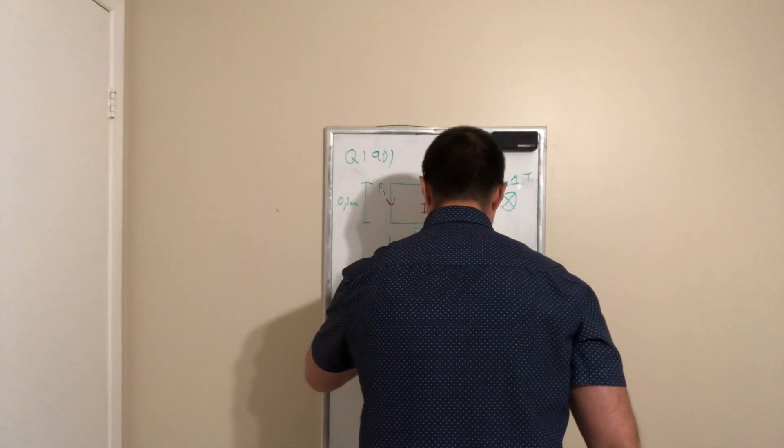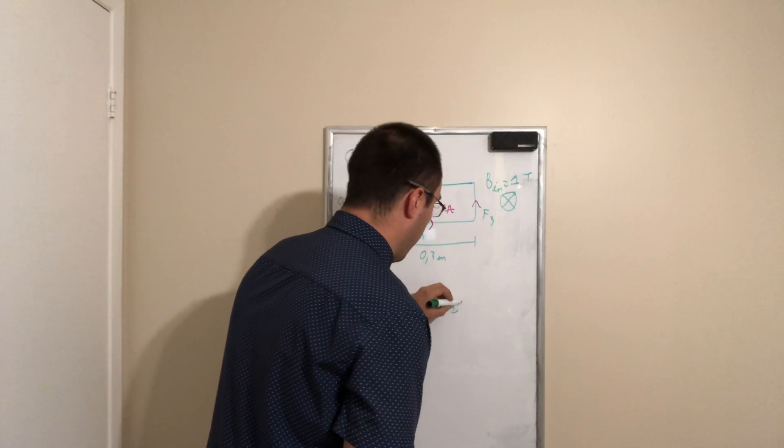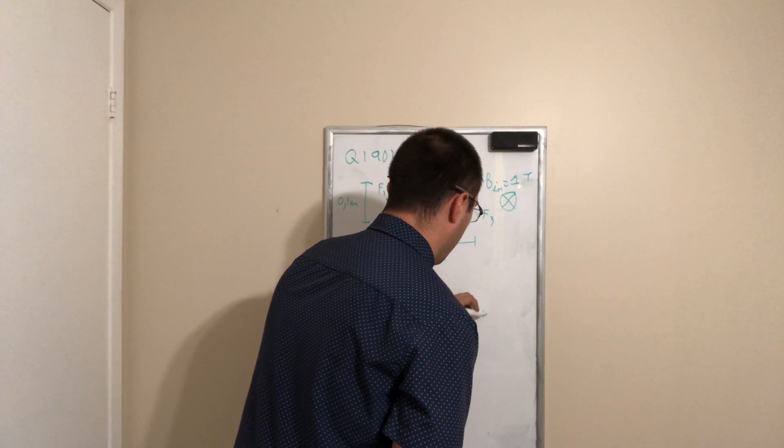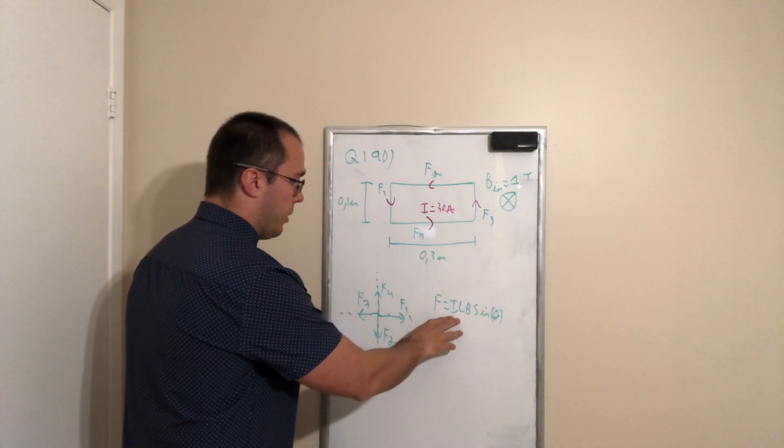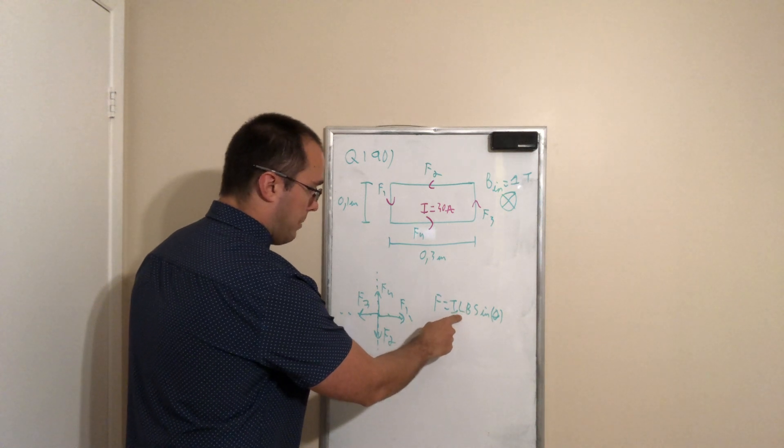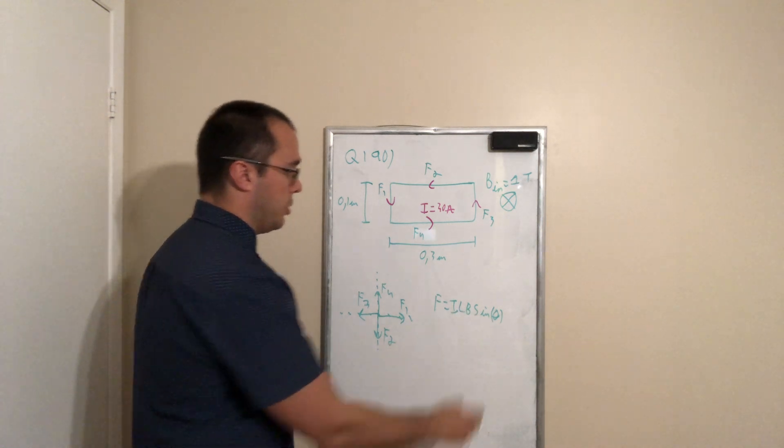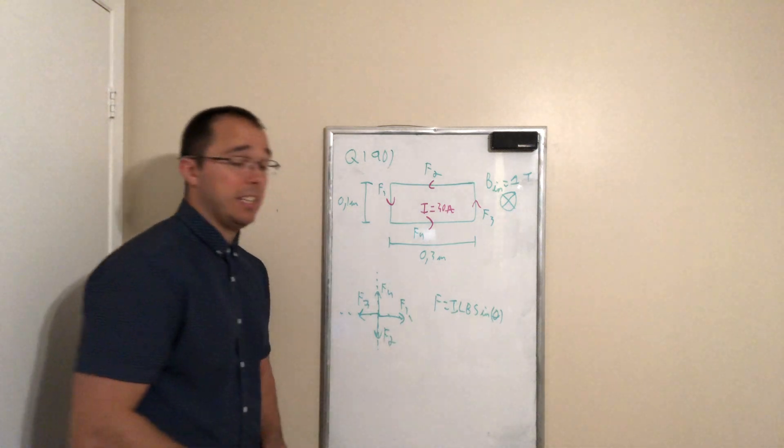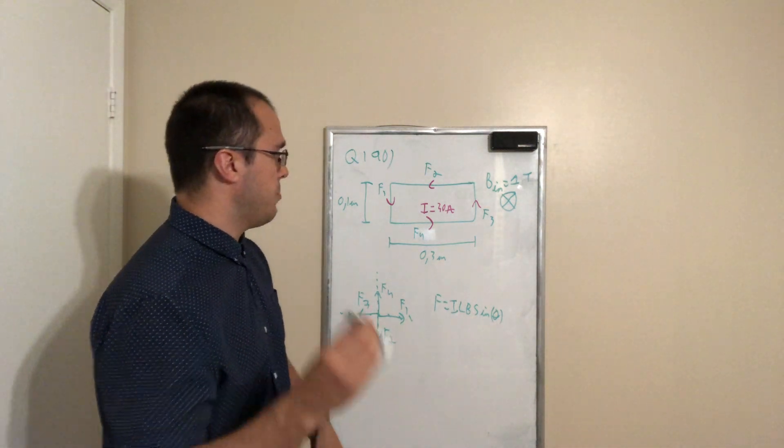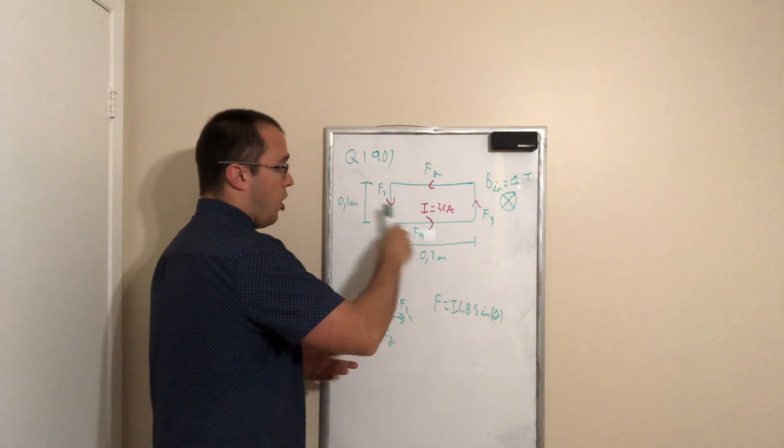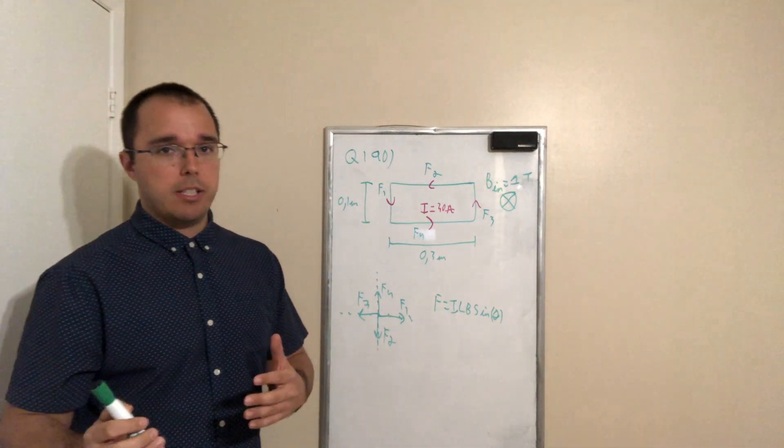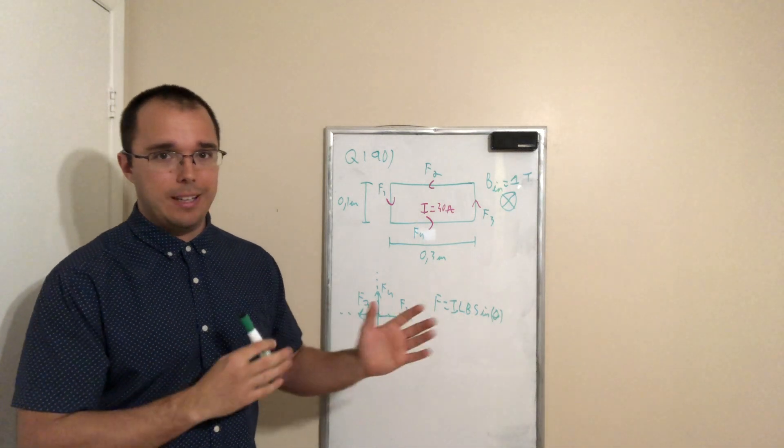Now recall that the formula for the magnitude of the magnetic force is equal to the current, multiply by the length, multiply by the magnetic field, multiply by the sine of the angle between the magnetic field and the current. Because the magnetic field is pointing into the board and the current is on the board, they are always perpendicular, so the angle is always 90 in this case.